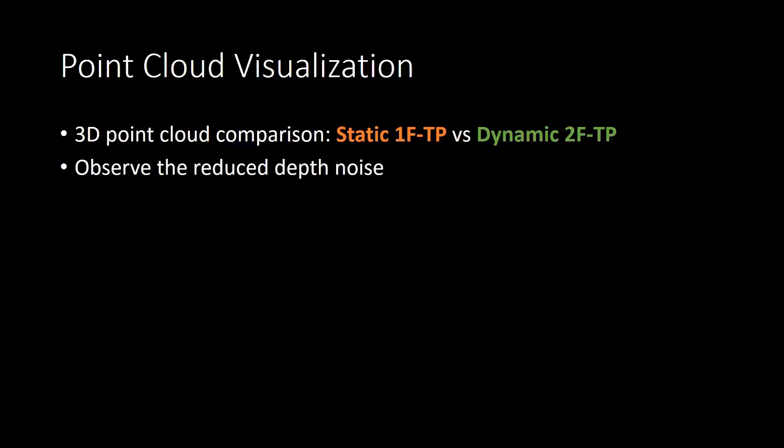To further illustrate the reduction in depth noise, we show the same data as a point cloud. In this visualization, we show the static one-frame two-pass model in orange and the dynamic two-frame two-pass model in green. Observe the reduction in depth noise.